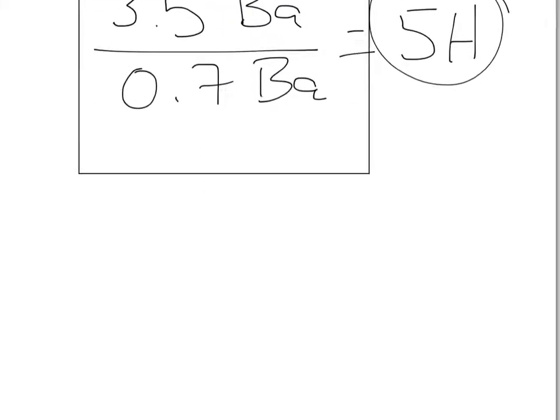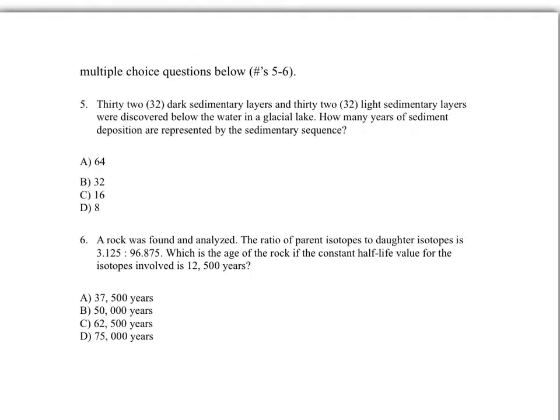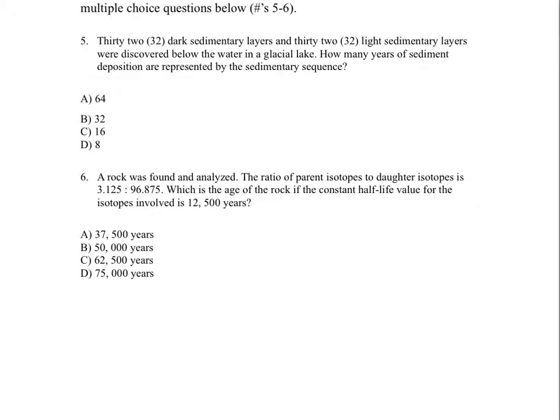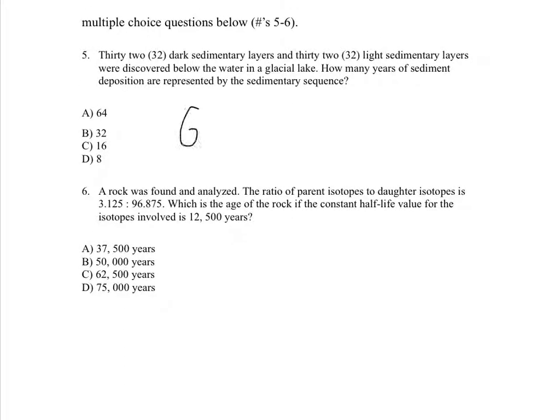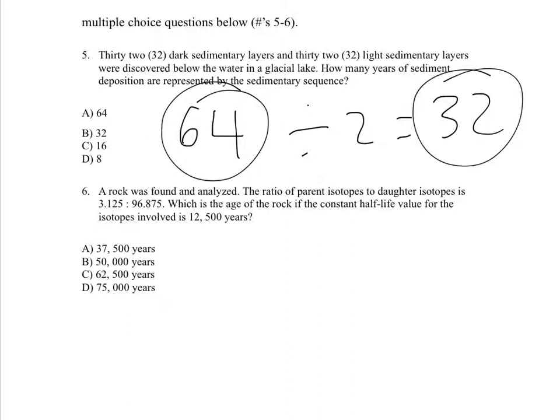So just moving on to the next problem. We have two more problems left. This one here just says we have 32 dark and 32 light sedimentary layers. So if we add that together, we will actually get 64 layers. So the number of layers you need to divide by 2, and that will tell you how many varves you have. So we have 32 varves, which happens to be 32 years of sediment deposition, so the answer is B.